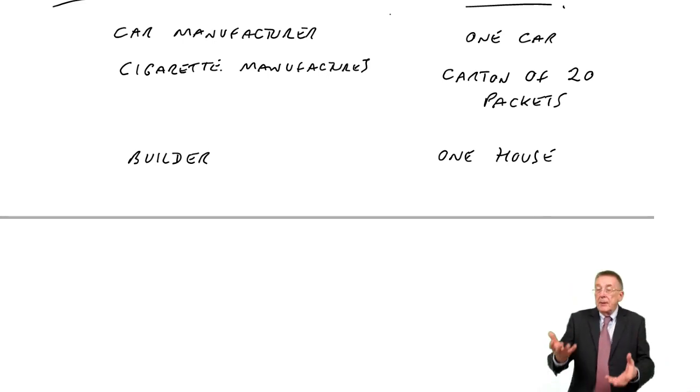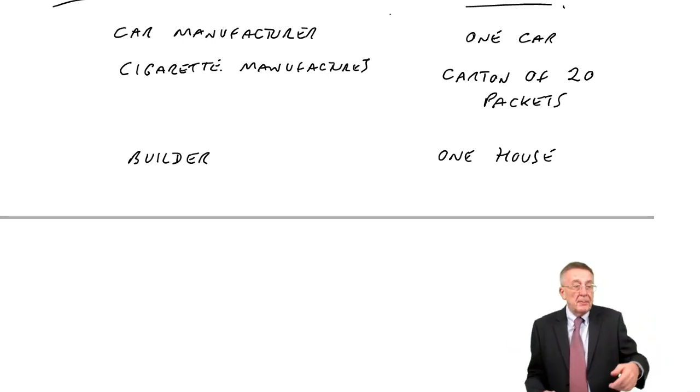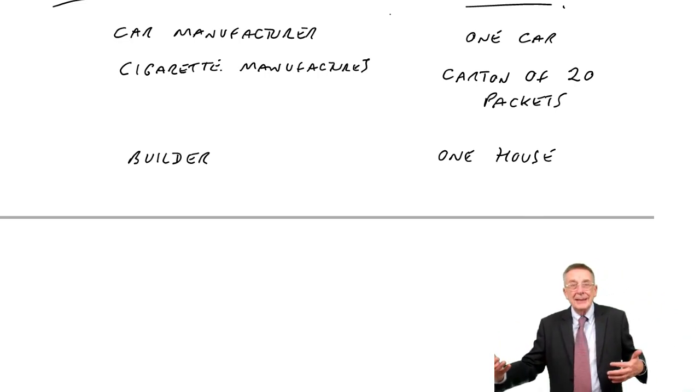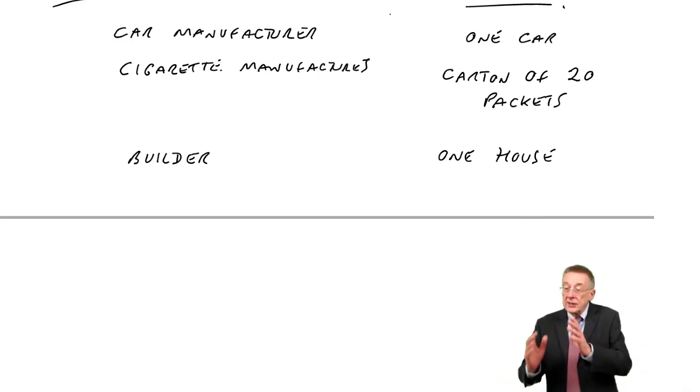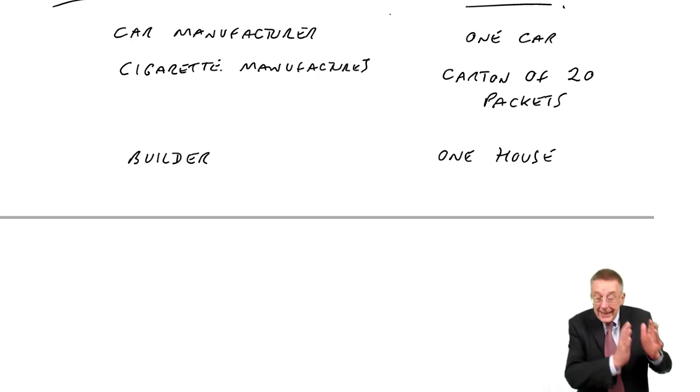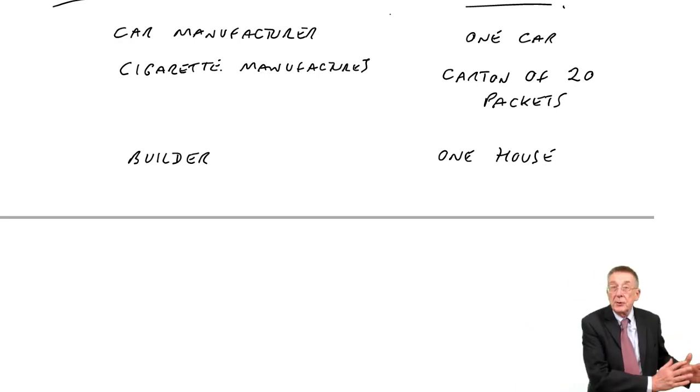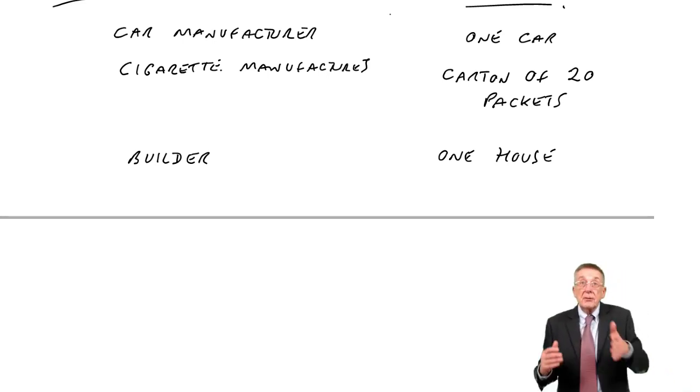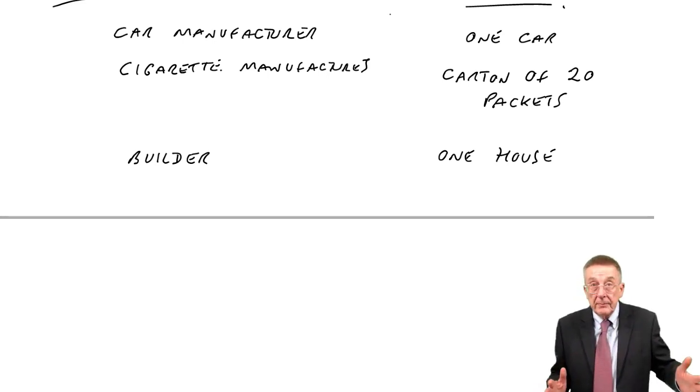And what about the next one, a builder? A builder building houses. Well, if they're building houses, I think the obvious one is one house. But there is one difference from the car manufacturer, that a car manufacturer might be selling thousands of the same identical car. Fine, we only need to know the cost of one of those and we've got the cost of all of them. But a builder is likely to be building all sorts of different houses. Some might have two rooms, some might have five rooms. And so the builder is likely to have to cost each house separately. The car manufacturer, if they're all identical cars, once you've costed one, you've costed all of them.